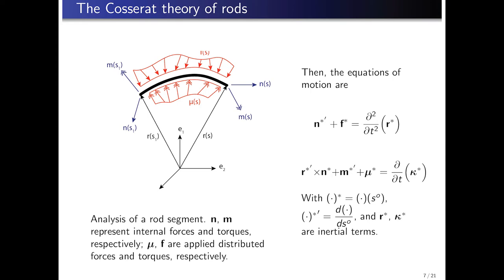The equations of motion for the Cosserat theory are stated here. The first equation belongs to the linear momentum balance, and the second equation to the angular momentum balance. As described here, vectors n and m are the internal forces and torques, while vectors mu and f are the applied forces and torques, respectively. Finally, there are the terms associated to the temporal derivative, which are the inertial terms. And, as already mentioned, the formulation is described in terms of the reference configuration.